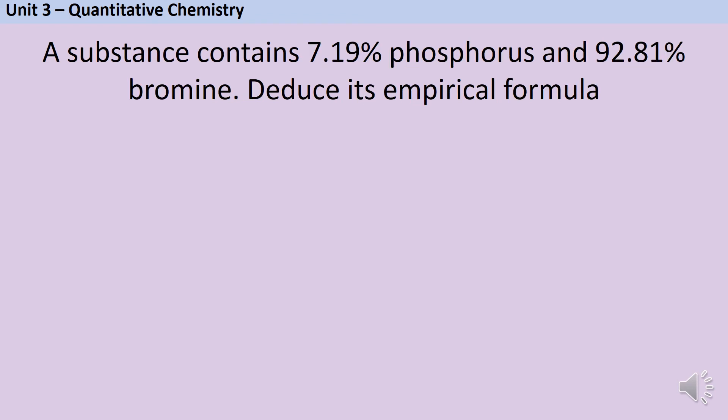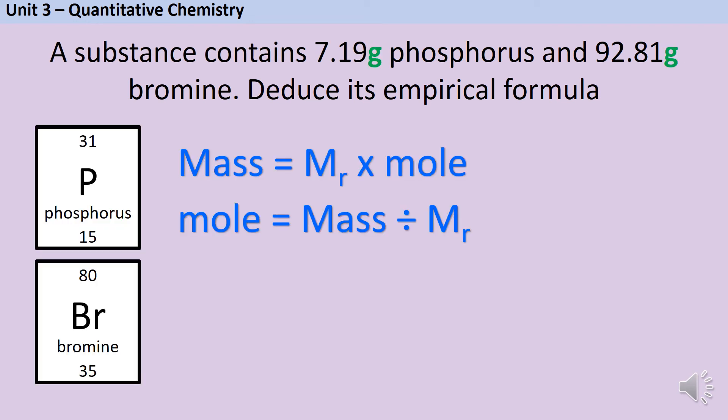Now this is our second type of question. Sometimes we don't get masses we get percentages, and you might look at this and go well I don't know how to do that. But the easiest way is just to imagine in the question they've told you you have 100 grams of the substance, because if you have 100 grams then suddenly 7.19 percent becomes 7.19 grams and likewise 92.81 percent becomes 92.81 grams and now we can just do exactly the same process.